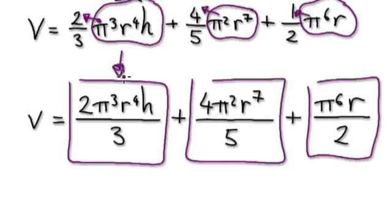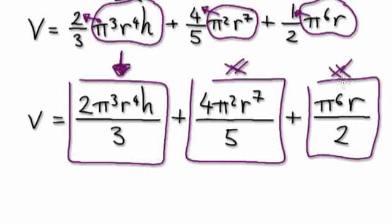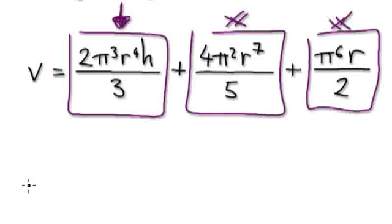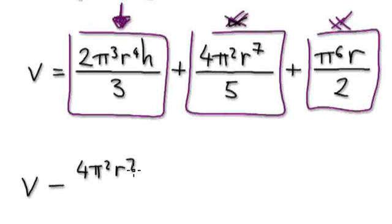This is the most important block here because you're trying to make h the subject, and h is stuck in this block. So let's kill off this one and this one — take away this block, take away this block from both sides. So take the v down first, and then take away this block here, which is 4 pi squared r to the 7 over 5.